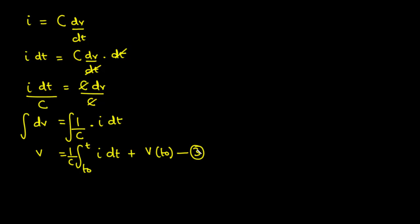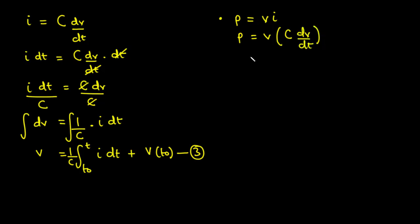Next, we derive a formula for the instantaneous power delivered to a capacitor. Instantaneous power p equals instantaneous voltage times instantaneous current. Substituting i = C(dV/dt) from equation two, we get p = v · C(dV/dt). Pulling out the constant C, this becomes p = C·v·(dV/dt). This is equation four — the instantaneous power delivered to a capacitor.